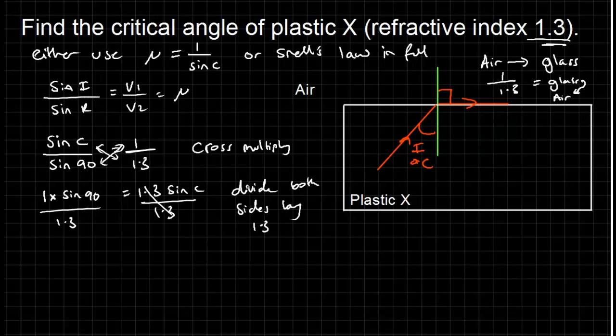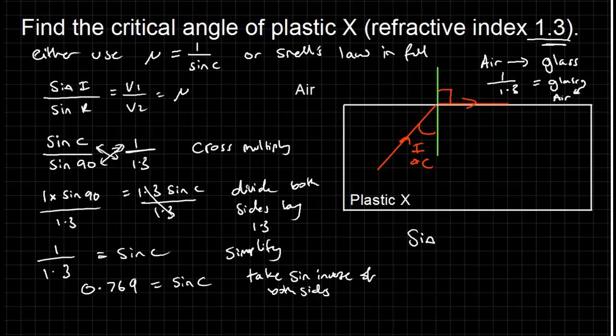Divide both sides by 1.3 to get sine c on its own, calculating 1 times sine 90 divided by 1.3 is a number on the calculator, and then taking sine to the inverse of that number should get me to the critical angle. So now I'm taking sine inverse on both sides.